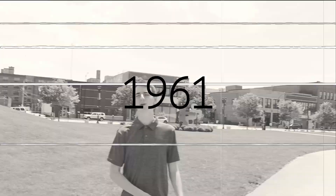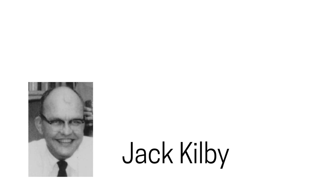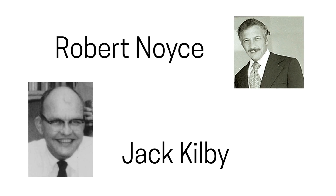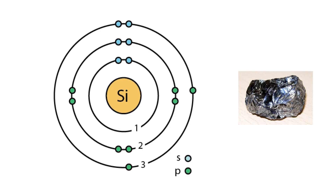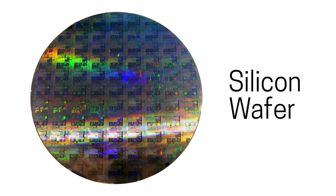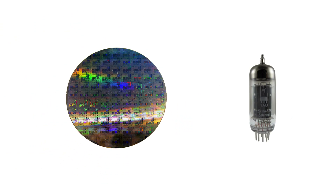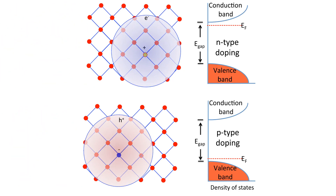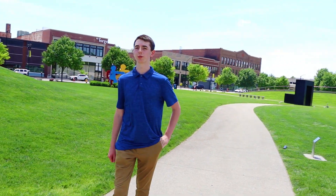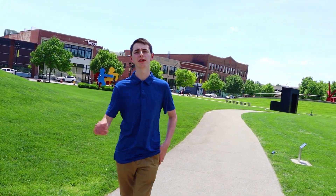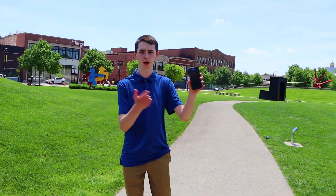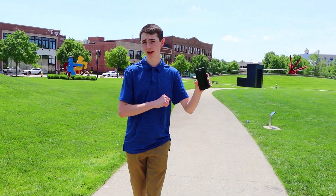Fast forward to 1961 when two electrical engineers, Jack Kilby and Robert Noyce, found that the 14th element silicon was able to be manufactured with impurities to perform the exact same function as a vacuum tube, but take up significantly less volume due to its semiconductor properties. This breakthrough led to producing computers that were significantly smaller, including the phone in your pocket.